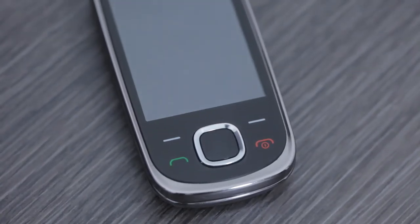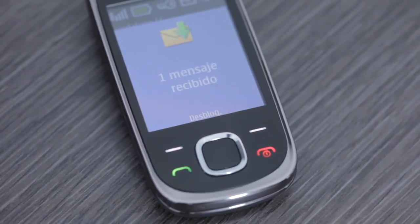Each time the device changes its status between worn and non-worn, an SMS is sent to the call center informing of this event and also includes the date, time and GPS position.